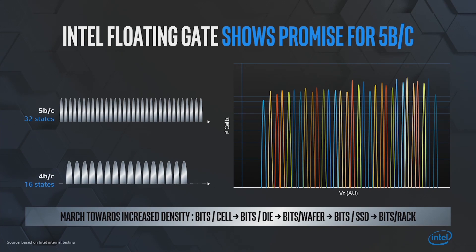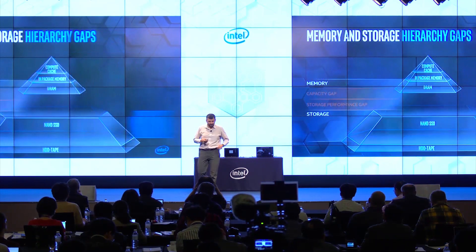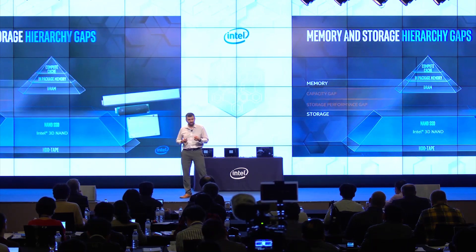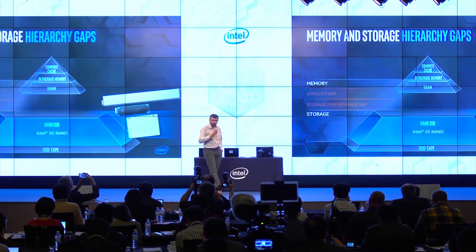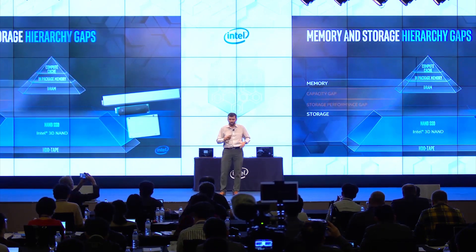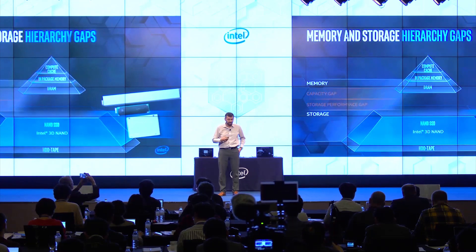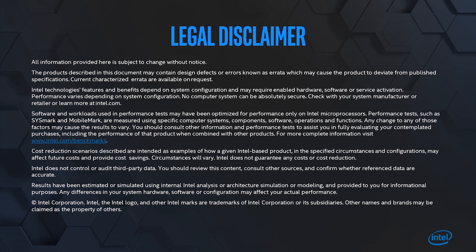The various vectors we are pursuing are bits per cell, bits per die through our choices of architecture, which results in better bits per wafer, more bits per SSD, and more bits per rack through all the innovations we do all the way from technology to SSDs. As a result, I hope I've convinced you that the Intel 3D NAND technology will help us drive leadership in aerial density, and as a result we should be able to address the performance cost gap. Thank you.